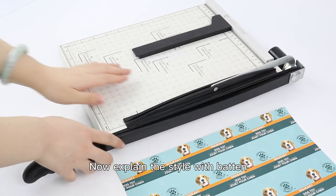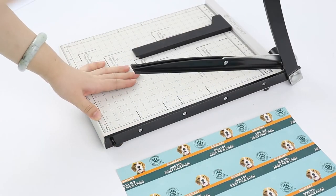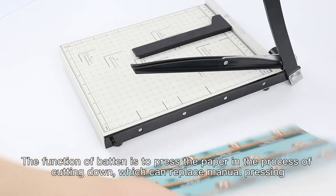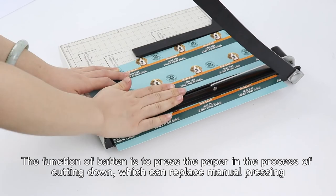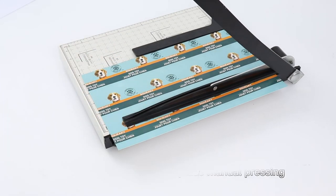Now explain the style with baton. The function of baton is to press the paper in the process of cutting down, which can replace manual pressing.